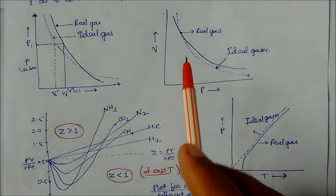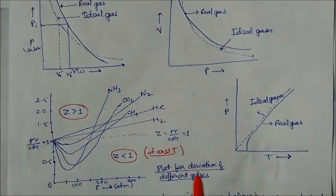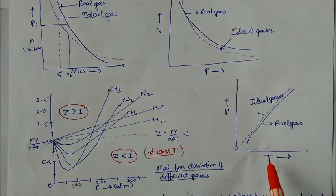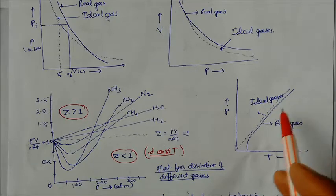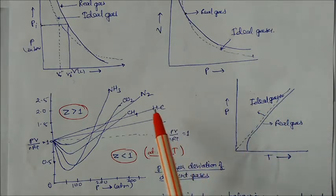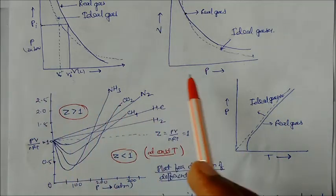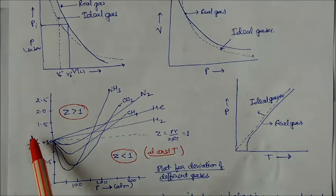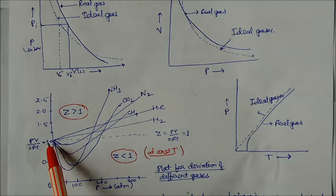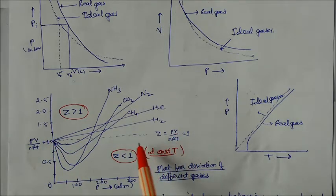We can also draw a pressure-temperature graph. For ideal gases, the graph falls as a straight line, but real gases start higher and then go constant, becoming parallel to the ideal gas line at higher temperatures. Additionally, we can look at the PV/nRT versus pressure graph, which introduces the compressibility factor Z, where Z equal to 1 represents ideal gas behavior.